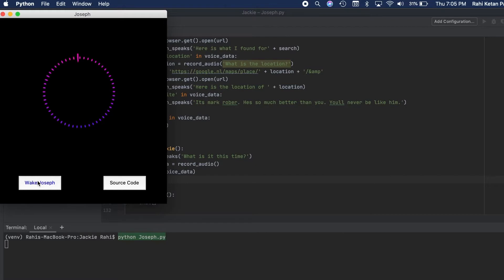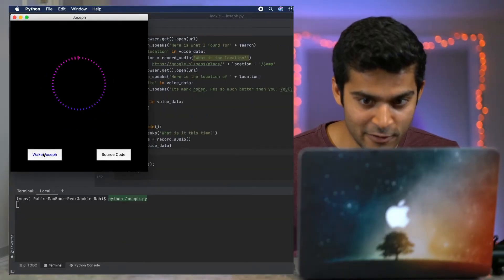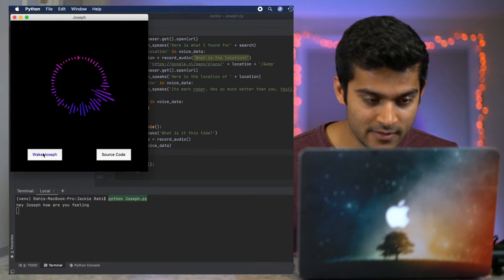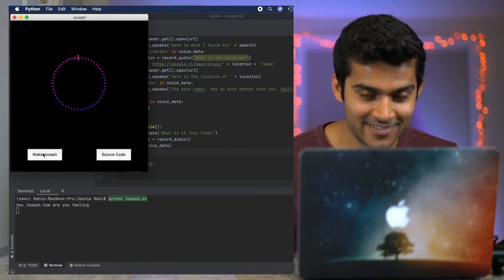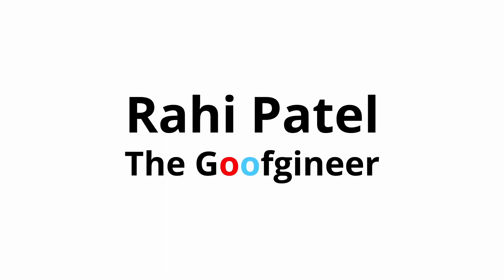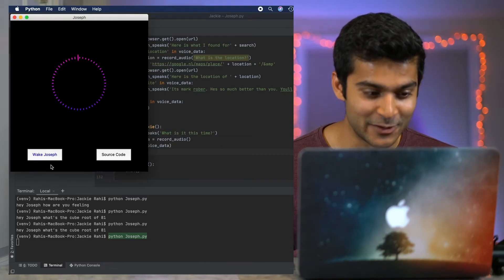What is it this time? Hey Joseph, how are you feeling? Well, just great now that I have the oh so wonderful pleasure of serving you. Hey everyone, I'm Rahi Patel and in this video I want to explore the world of voice assistants. To help with that, I programmed Joseph, the bitterly sarcastic robot.